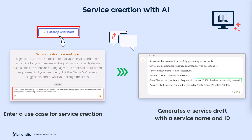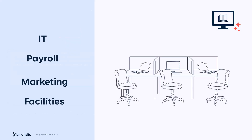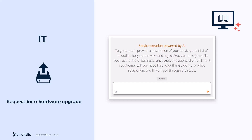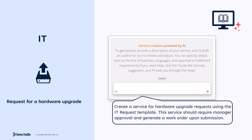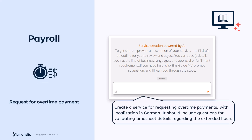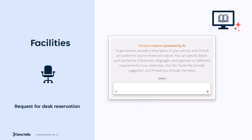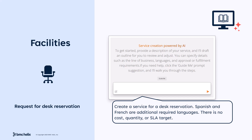Receive an output in the form of a service in the draft state. Let's see some examples of prompts you can refer to for the creation of services addressing various workplace requirements. Starting with the IT department, here's a prompt for a request to upgrade hardware, which includes a manager's approval. There's also a prompt for a payroll request for overtime payment with a localization requirement. For the marketing team, the prompt for requesting branding materials includes work order generation. For the facilities department, here is a prompt to request a desk reservation.